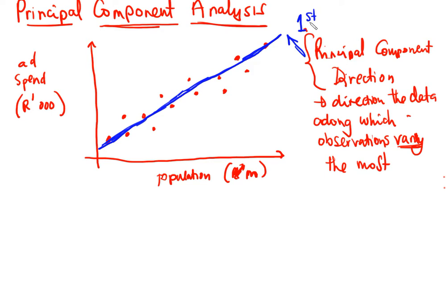If we projected the observations onto this line — we'll see this in the next video as well — we project all observations onto this line. Each point, when projected onto this line, is going to land at a position along it. This line is the one that gives us the most variability.